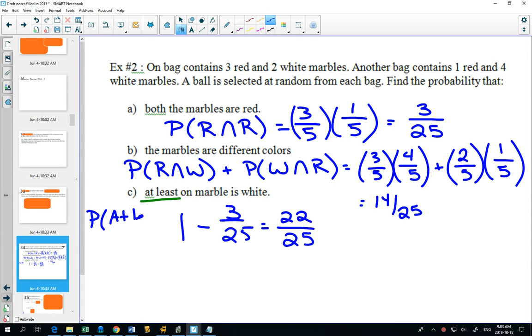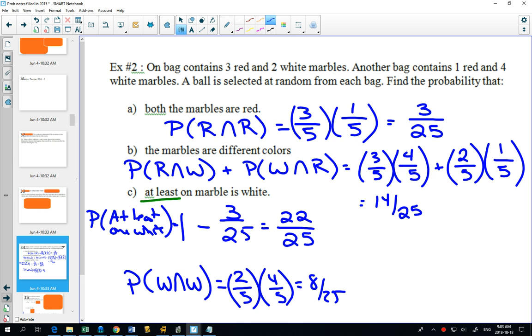And you can even write it out in words. Had we figured out the probability of white and white, in the first one is 2 out of 5, and white in the second one is 4 out of 5. That would give us 8 out of 25. Can you see that if you add this 8 out of 25 to the 14 out of 25 we found in Part B, we also get 22 out of 25.